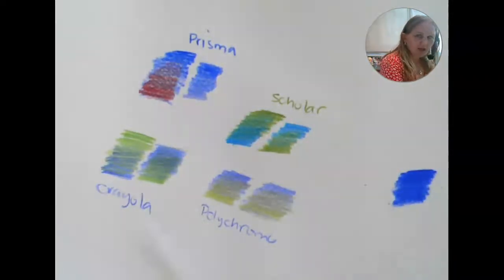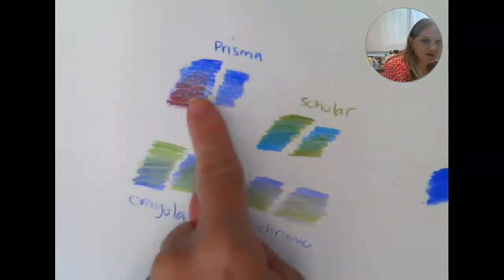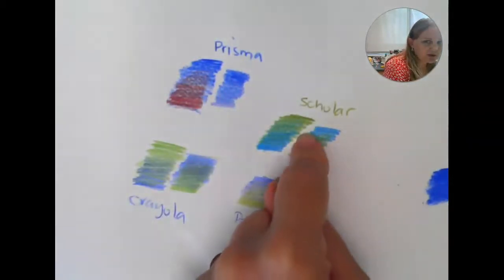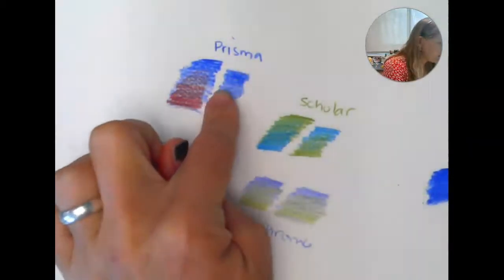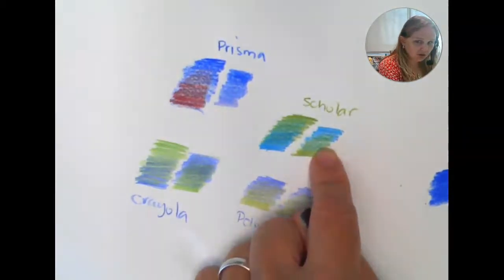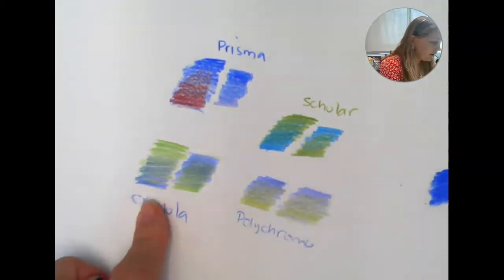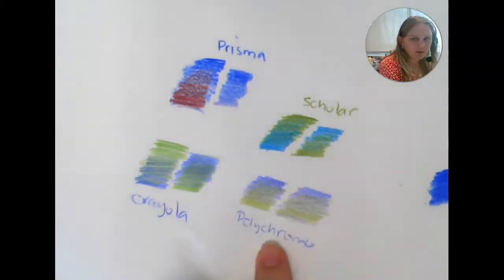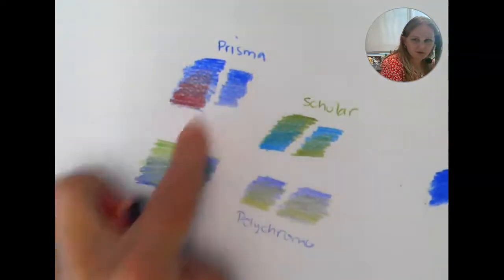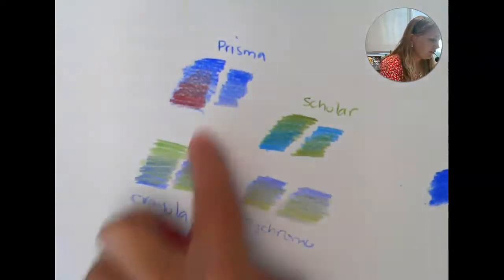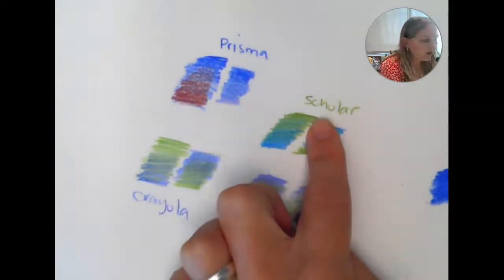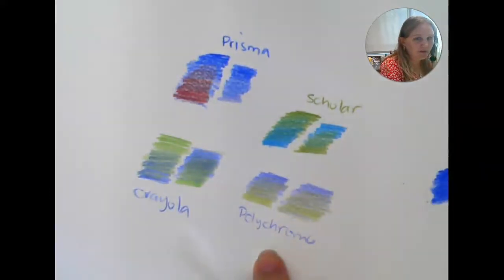So with me, if you'll notice here I've already drawn this to save time. So I've got Prismacolor, these are the Prismacolor Premier, Scholar, this is Prismacolor Scholar, this is Crayola, and this is Polychromo. These three pencils here with the exception of Polychromo are all wax-based pencils. This Polychromo is oil-based.